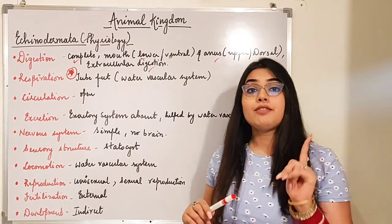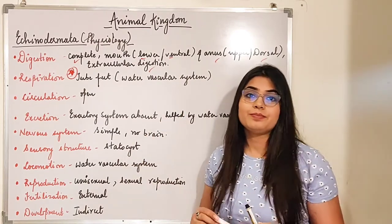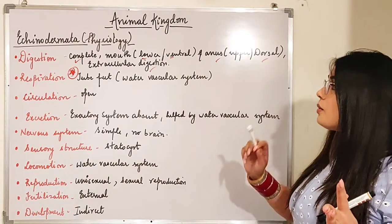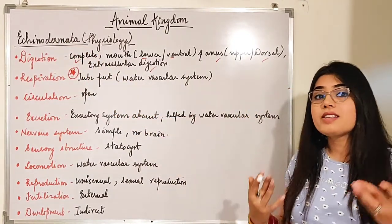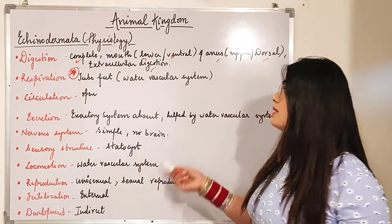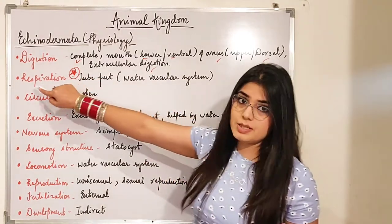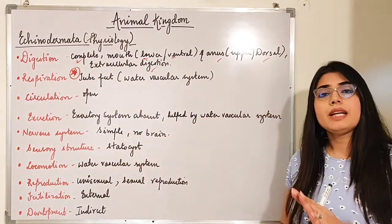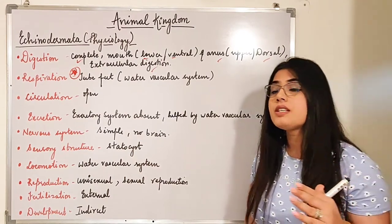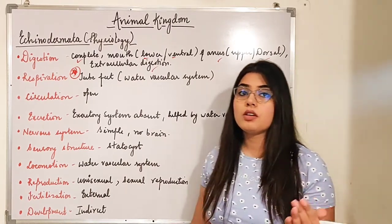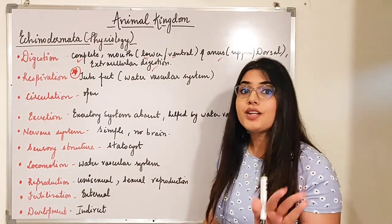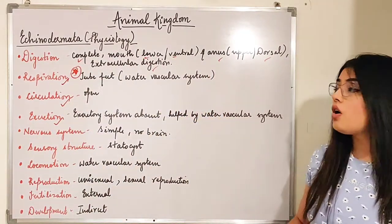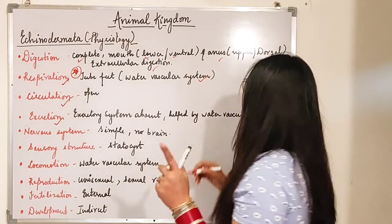Can you remember from the first phylum Porifera — there is a water canal system? Here in Echinodermata we are having a water vascular system. The water vascular system is also helping in the process of respiration and excretion. The excretory system is completely absent in Echinodermata, so the water vascular system is performing the function of excretion as well. So the water vascular system is doing three functions: respiration, circulation, and excretion.